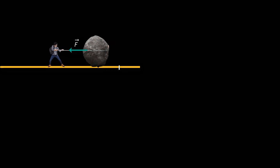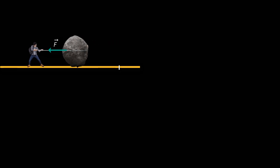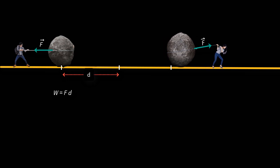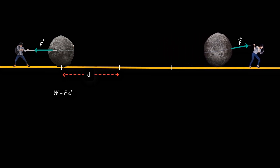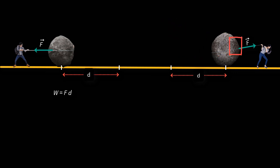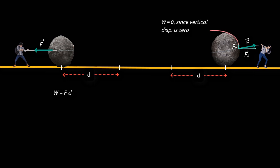If you apply a force that is parallel to the displacement, it is quite easy to find the work done, which is force times displacement. But if you apply the same force at an angle to the displacement, the work done would not be the same. The reason is that the force you are applying is not entirely used in pulling the rock — part of it acts in the vertical direction and part in the horizontal direction. The part acting in the vertical direction is not doing any work, since there is no vertical displacement.